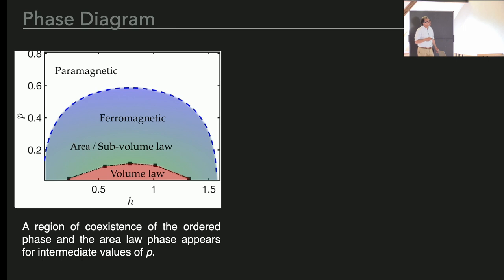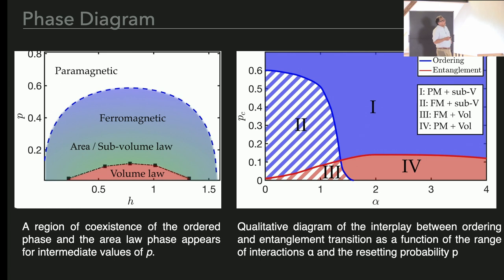This is the phase diagram that we get. There is a dissipative transition between ferromagnet to paramagnet. However, inside the ordered transition, there is an additional entanglement change between volume and area or subvolume. If we look at the transition as a function of alpha, then you will see that while the ordering transition is very sharply dependent on the range of the interaction, actually the entanglement transition is much weakly dependent and actually will survive at very short ranges. And with this, I will conclude.